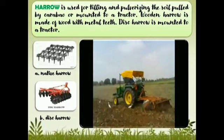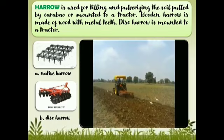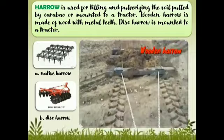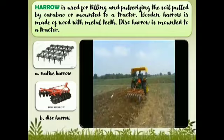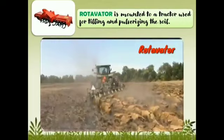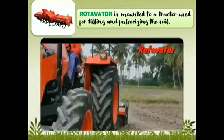Harrow is used for tilling and pulverizing the soil, pulled by a carabao or mounted to a tractor. Wooden harrow is made of wood with metal cleats. This harrow is mounted to a tractor. Rotavator. It is mounted to a tractor, used for tilling and pulverizing the soil.